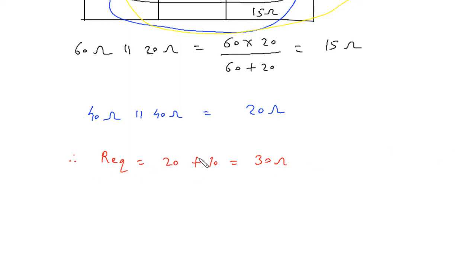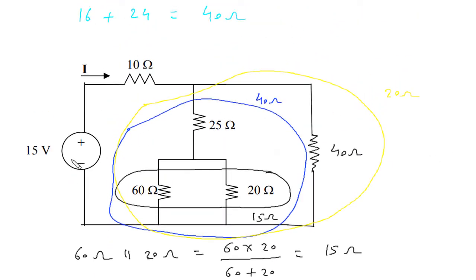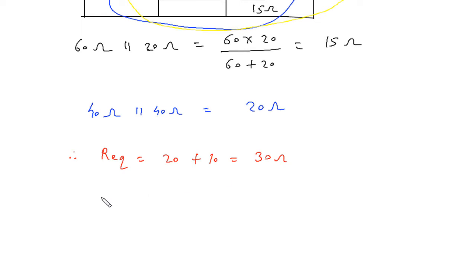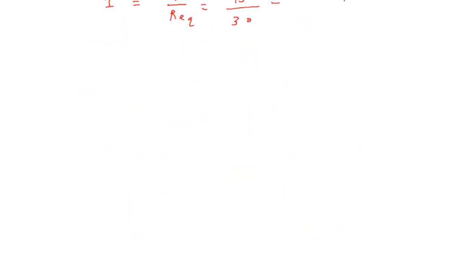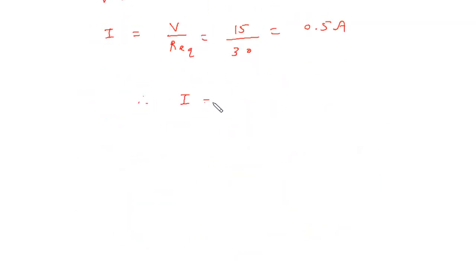We have the value of resistance and the value of voltage. Voltage is equal to 15 Volt and resistance is equal to 30 Ohm. From this we can find the value of I. So I is equal to V by Req: 15 by 30, which gives 0.5 Ampere.